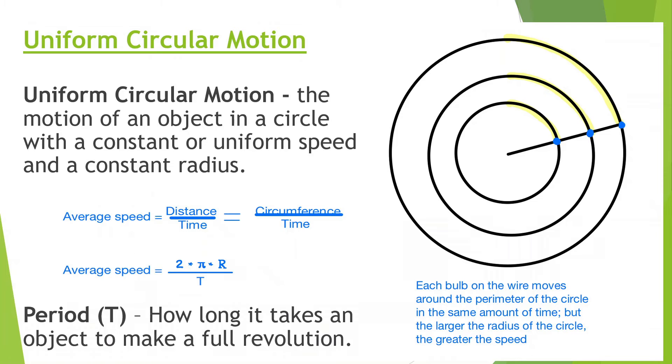Alright, so let's look at Uniform Circular Motion, the motion of an object in a circle with a constant or uniform speed and a constant radius. Speed is distance over time. If things are going in a circle, it's the circumference divided by time: 2πr divided by T, or what we call the period, how long it takes an object to make a full revolution.